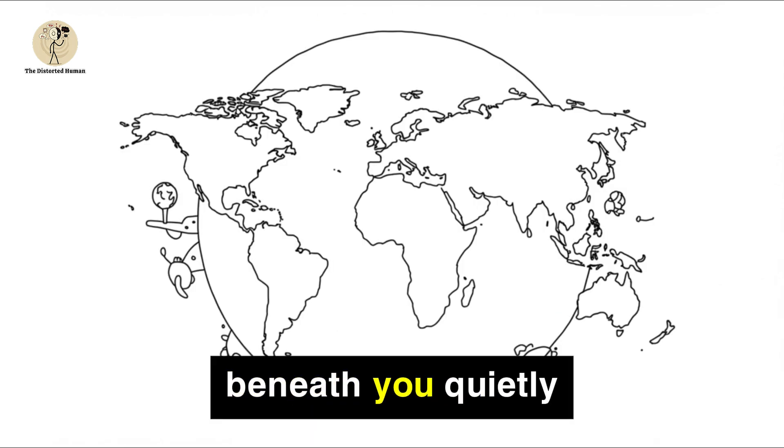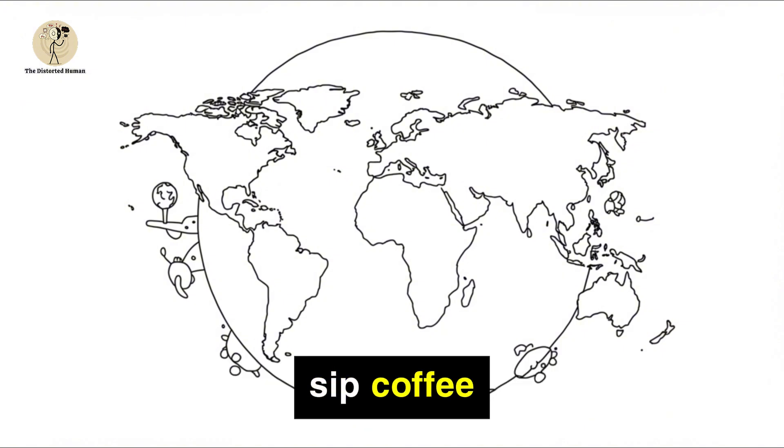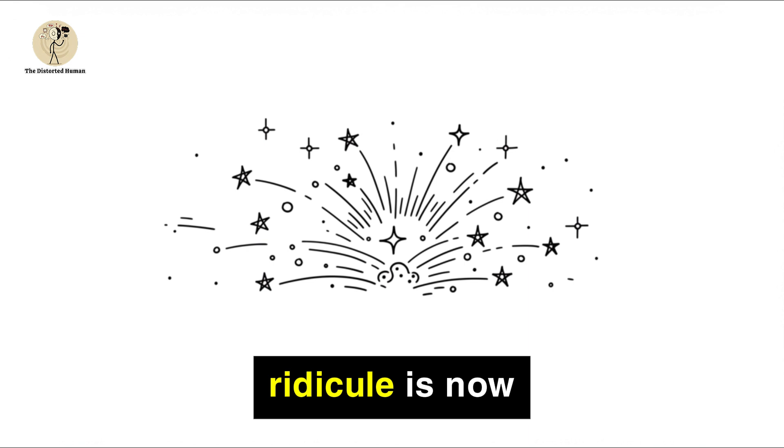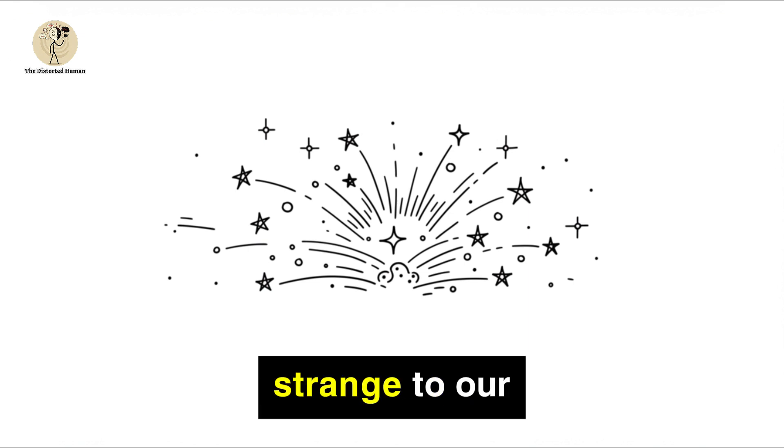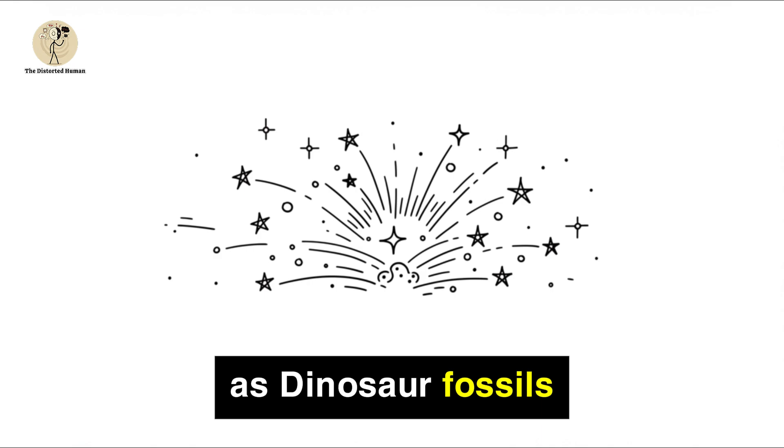Wegener had been right all along. Imagine the ground beneath you quietly sliding, shaping oceans and mountains while you sip coffee. What was once ridicule is now textbook science. The continents are still drifting today. Millions of years from now, maps of Earth will look as strange to our descendants as dinosaur fossils look to us.